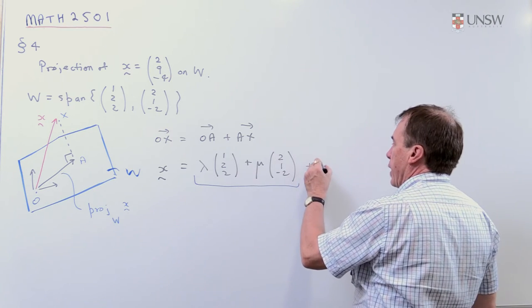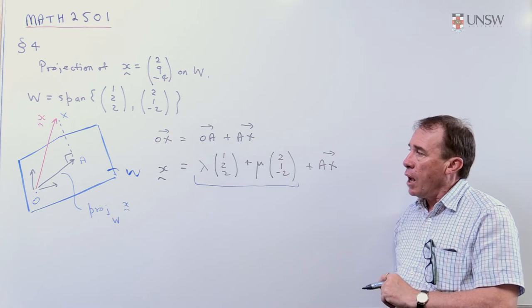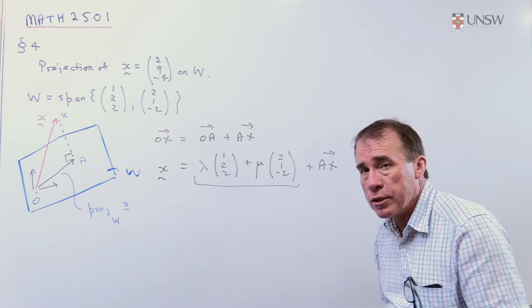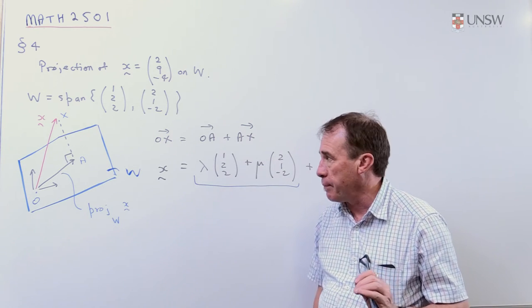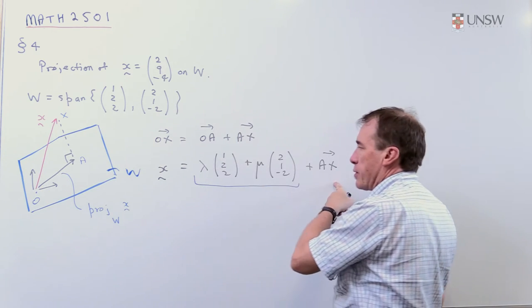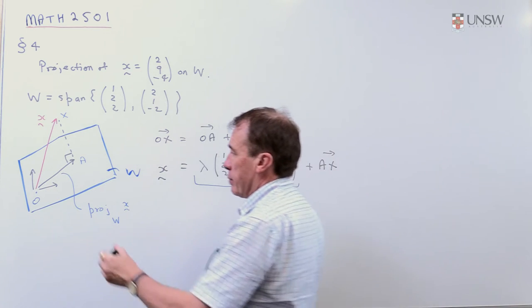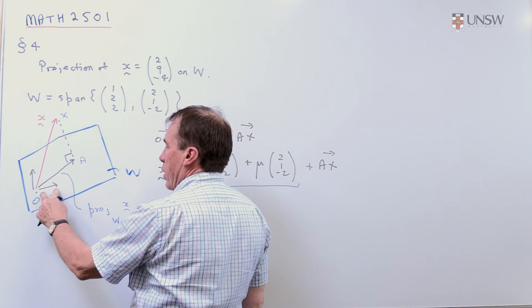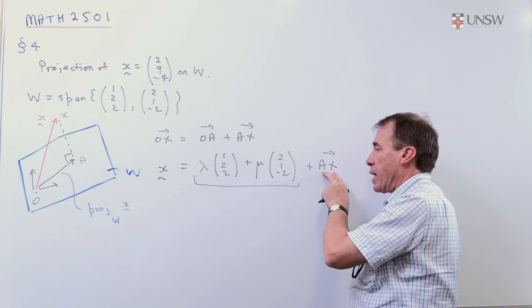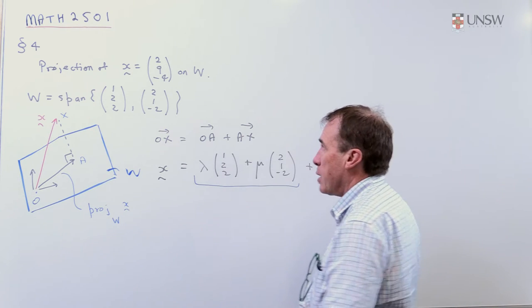Plus, well, I've got this other vector AX that doesn't interest me greatly, but I'd better put it in. Now, what I want to do is to get my hands on the lambda and mu. And now I'm going to use the orthogonality idea. So I'm going to dot product both sides of this with the vector (1,2,2). Because remember that this vector here is perpendicular to AX. So when I dot product AX with (1,2,2), that term's going to disappear.